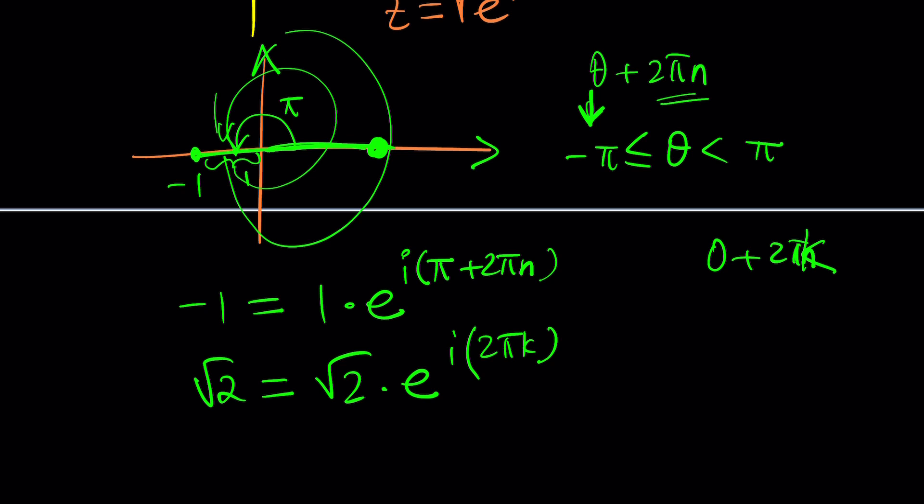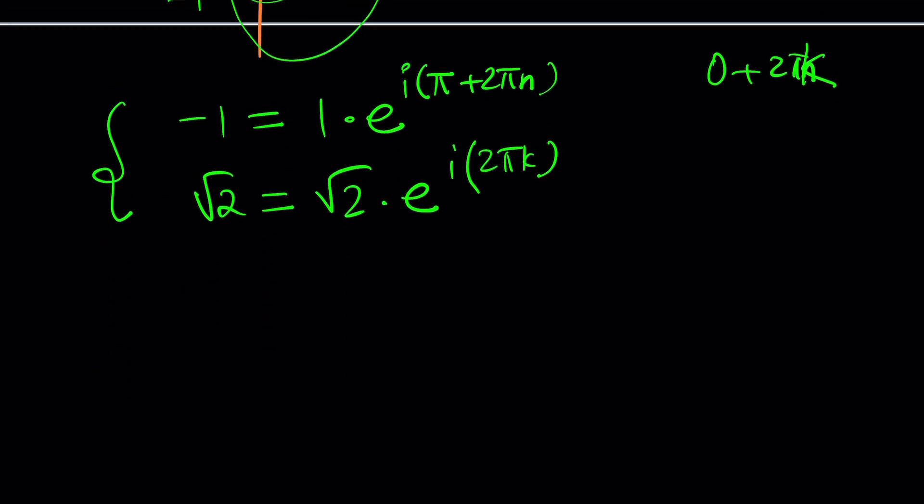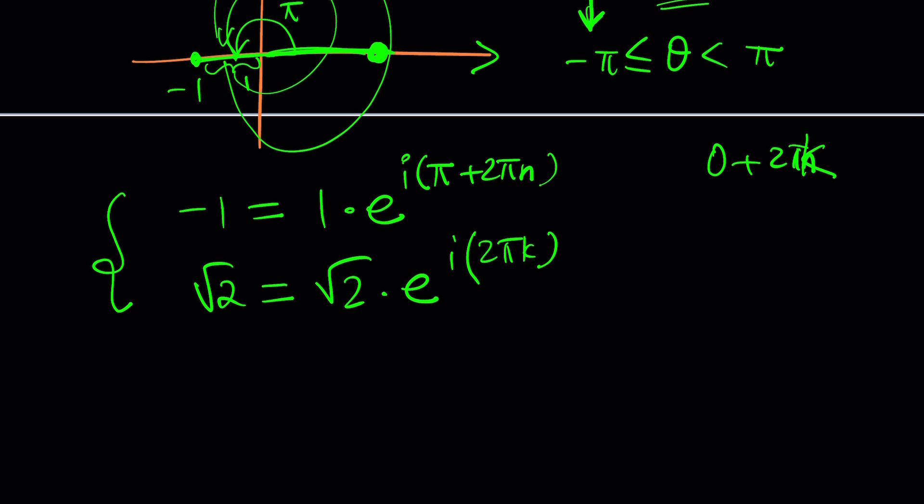So we have everything we need. We have all the ingredients. Let's go ahead and do it. So we're going to raise this number, the square root of 2, to the power z and that'll give us negative 1, which is 1 times e to the power i times pi plus 2 pi n.